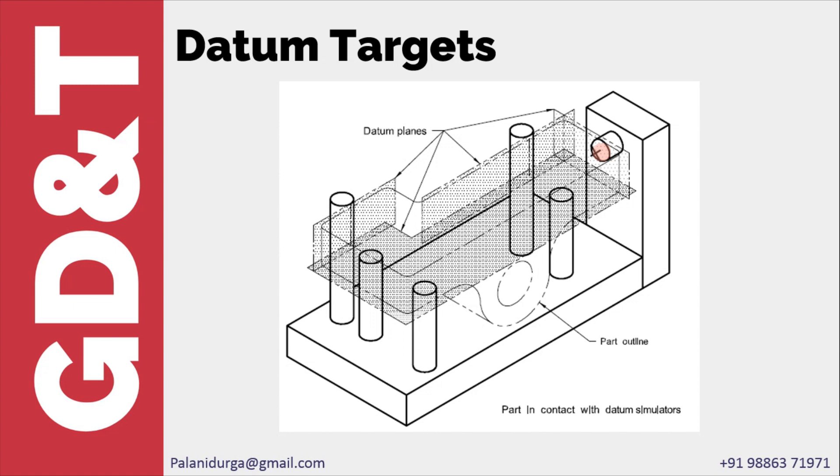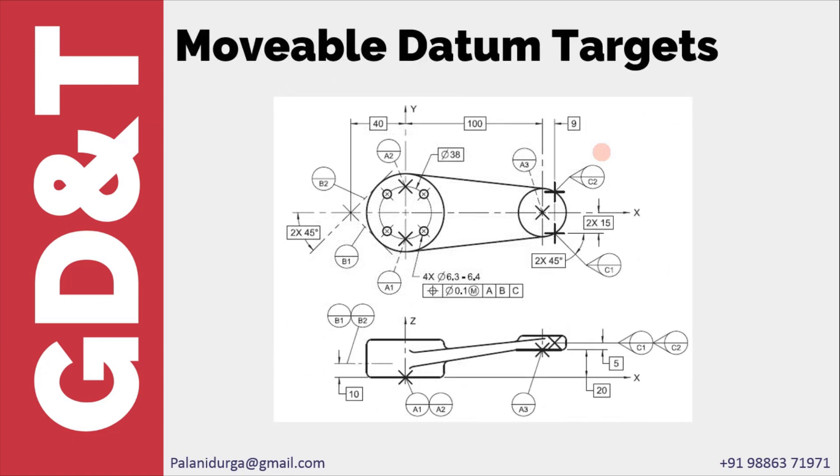In ASME Y14.5 2009 standard, one new symbol was introduced in datum targets which is called movable datum target. This is the symbol for movable datum target. It simply tells that the target point, line, or area can have a relative movement to accommodate the deviation in the part.